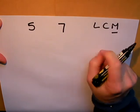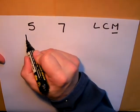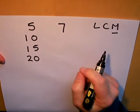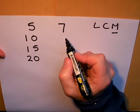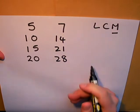Multiples basically mean the times tables, so if I write down the times table for 5: 10, 15, 20, and so on. And if I go through the 7 times table: 7, 14, 21, 28, and so on.